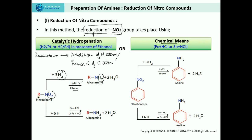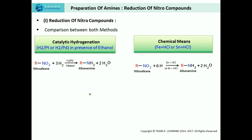Whether we take a nitroalkane, which is an aliphatic nitro compound, or nitrobenzene, which is an aromatic nitro compound, in both cases the alkyl or aryl group remains intact. Only the oxygen atoms are replaced by hydrogen atoms. This is quite an easy method to convert nitro compounds into amines, using either catalytic hydrogenation or chemical means.